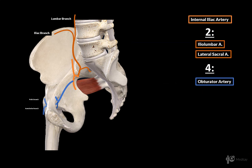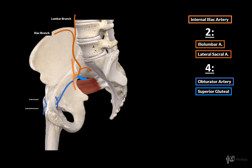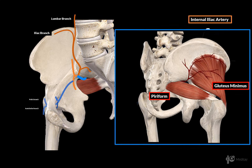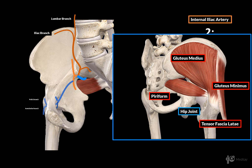Next we need to add the piriformis muscle, because out of the next three arteries, one will leave above the piriformis muscle and two below it. The superior gluteal artery leaves the pelvic cavity through the space above the piriformis muscle — the suprapiriform foramen — and then goes upwards. This artery supplies the gluteus minimus, gluteus medius, tensor fasciae latae, and the hip joint (articulatio coxae), sometimes also called the acetabulofemoral joint.